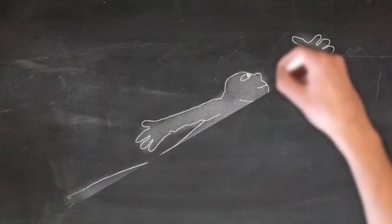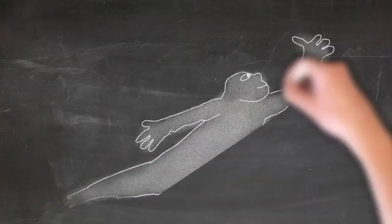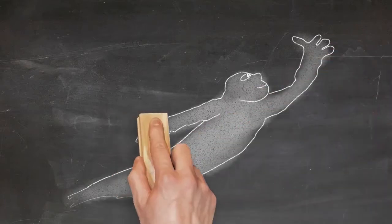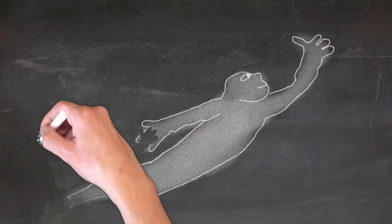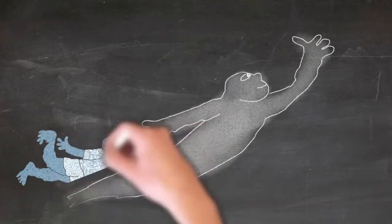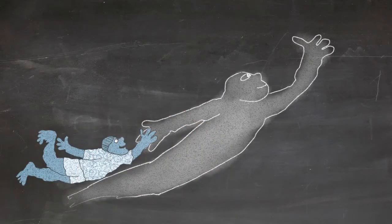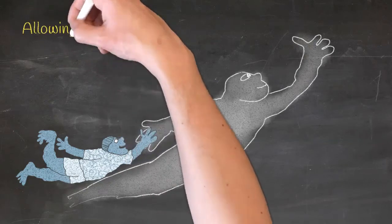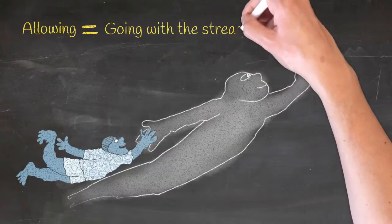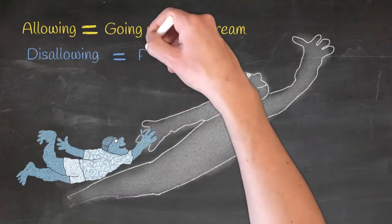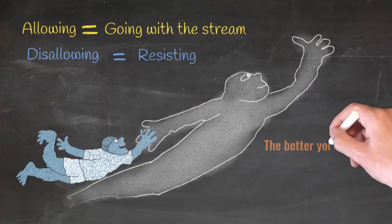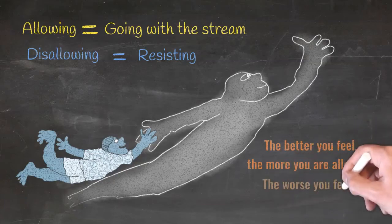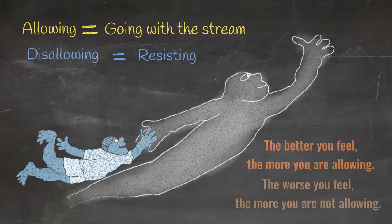So as this non-physical energy is summoning, there is this powerful stream that feels to you like inspiration. And when you turn and go in the direction of that stream, you feel the ease and continuity of your being. But when you don't, you feel the separation, too strong of word, you feel the resistance. So there is allowing which is going with the stream or current of who you have become. And there is disallowing or resisting or not going. The better you feel, the more you are allowing. The worse you feel, the more you are not allowing.